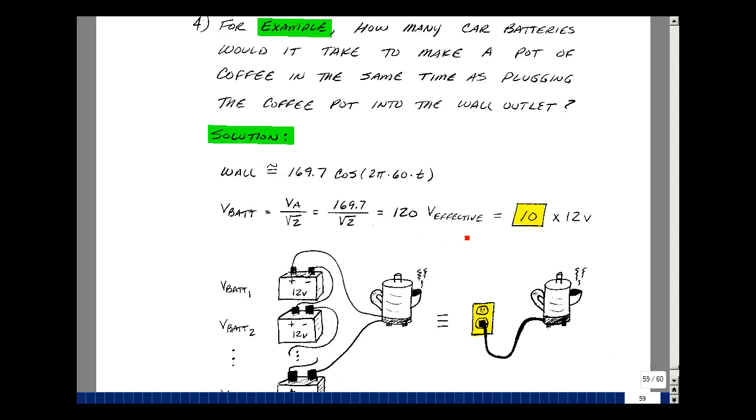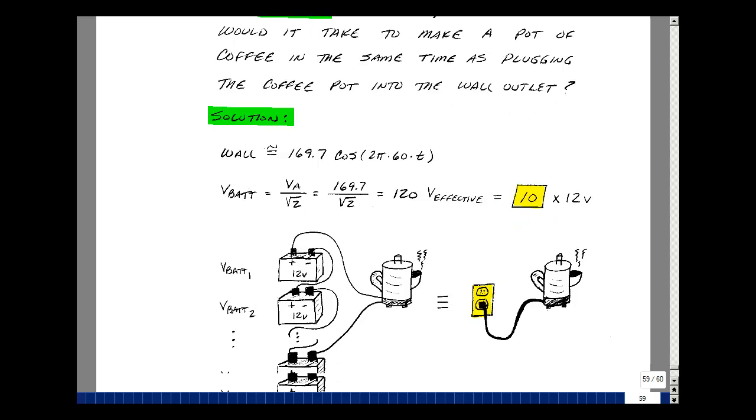We sometimes call this the effective voltage because it creates the same heating effect. That would be ten 12-volt batteries. If you were to take ten 12-volt batteries and hook them up in series, you would then create 120 volts DC, and that would make a pot of coffee at exactly the same time as plugging it into the wall outlet with voltage equal to 169.7 times the cosine of 2πf times t.